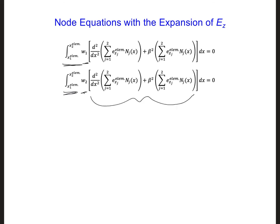For the first term, we're taking the second spatial derivative of the expansion of Ez. And for the second term, we are multiplying the expansion of Ez by beta squared.